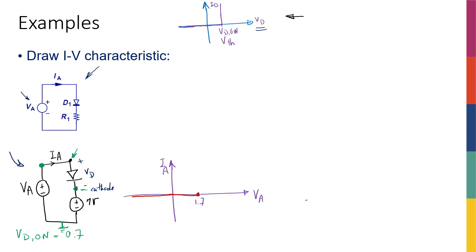Going back to our original circuit, the problem is that the cathode voltage is dependent on the voltage across the resistor, which is in turn dependent on the current — they're all related to each other. So there's no way to start from one point like in the simpler circuit and get to the answer directly; I need to make some assumptions.